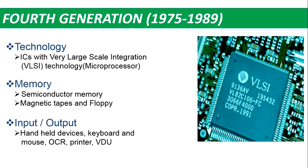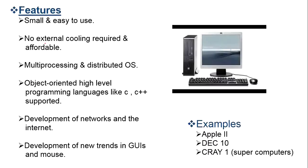Next came fourth generation computers, from 1975 to 1989. Microprocessors were developed — silicon chips with very large-scale integration, including thousands of transistors, resistors, and capacitors on each chip. The size of the computer was very compact and fast. Semiconductor memory was used, along with magnetic tapes and floppies. Advanced input-output devices such as optical character recognition were introduced. No external cooling system was required, and it was affordable. Multi-processing and distributed operating systems were developed, and object-oriented high-level languages such as C and C++ were also supported.